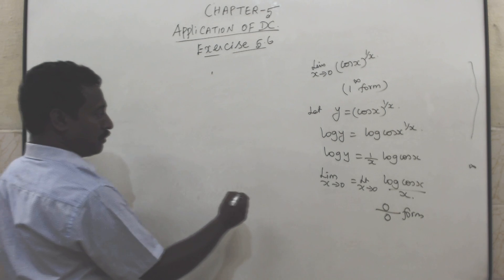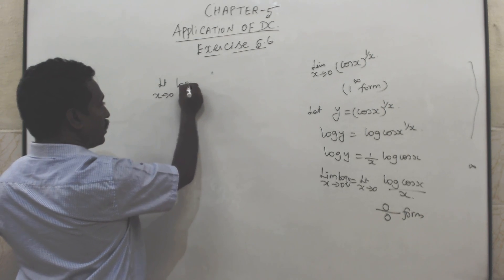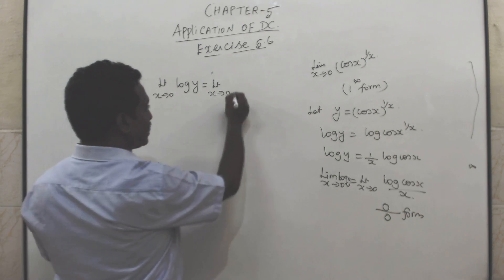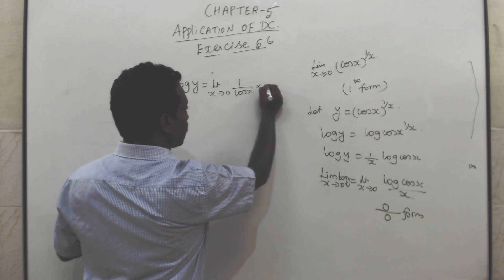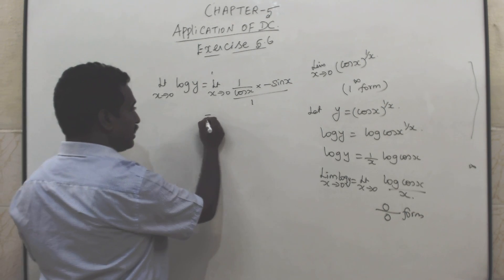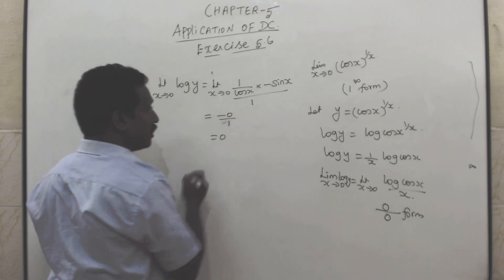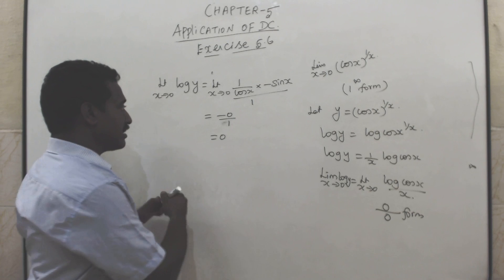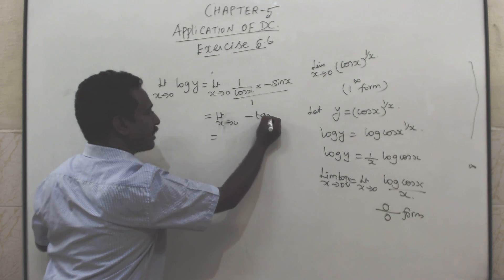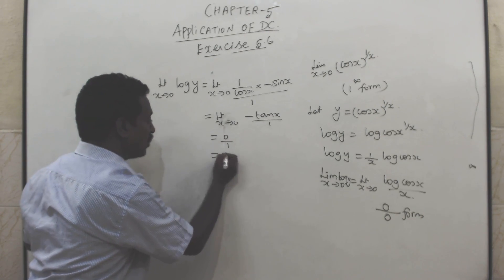Apply L'Hôpital's rule: differentiate log(cos x) to get (1/cos x)·(−sin x) = −tan x, and differentiate x to get 1. So the limit gives −tan x / 1. Substituting x = 0: tan 0 = 0, so the result is 0/1 = 0.